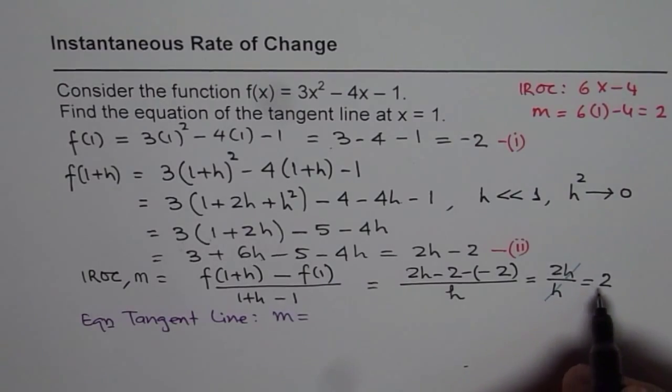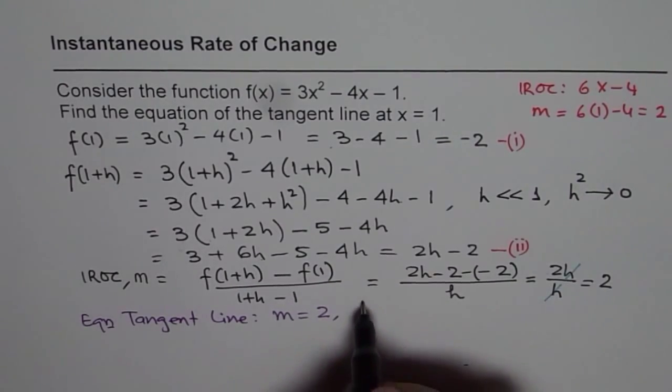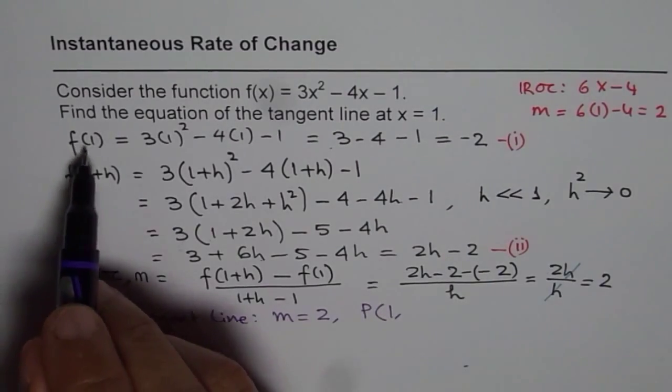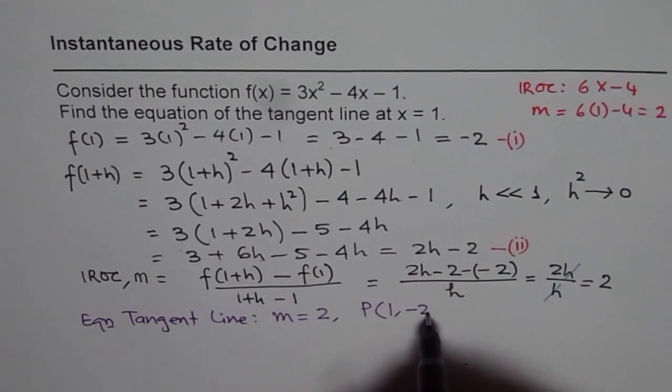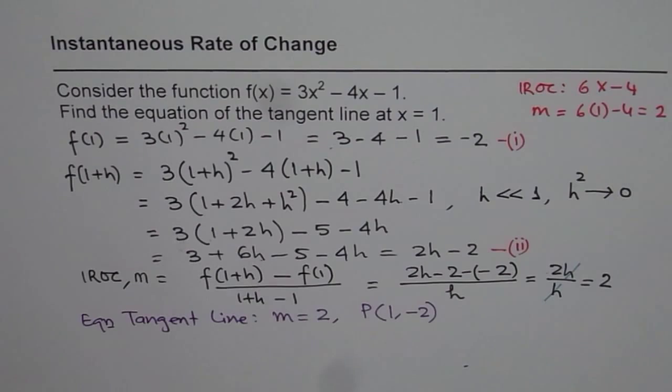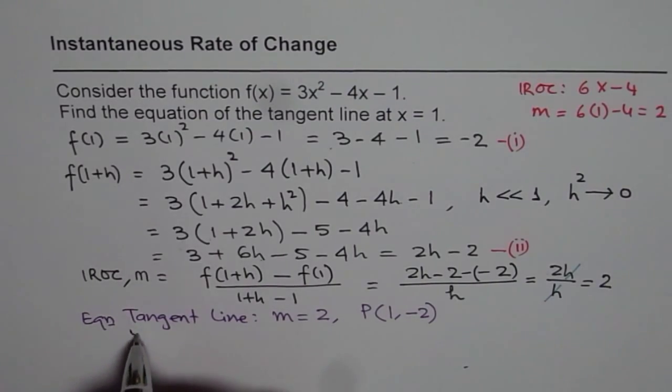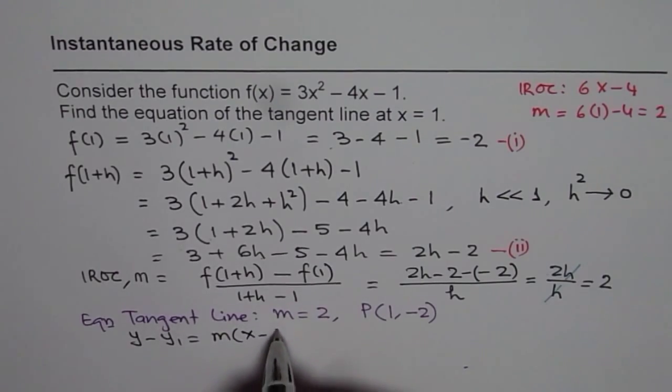And what we know here is that the slope of this tangent line is 2, and the point of interest is x is 1, value the function at 1 is -2. You can use point slope form or slope intercept form to find the equation. If I use point slope form, which is y - y₁ = m(x - x₁).